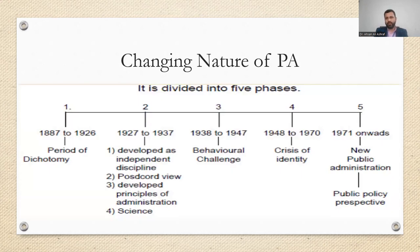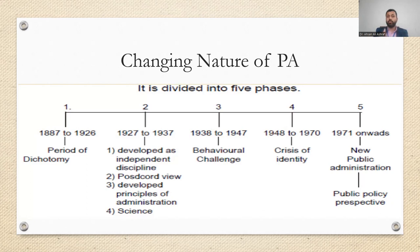The short history of public administration begins with the period of dichotomy — at that time there was no concept of public administration. The founding father initiated this concept and insisted it must be separately recognized. Then in 1927 to 1937 it was independently originated, and principles of administration were established. Next came the behavioral change phase, where with the help of public administration, changes in behavior emerged. This then converted into a crisis phase, leading eventually to the distinction between traditional and new public administration.